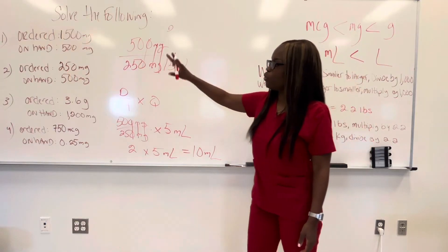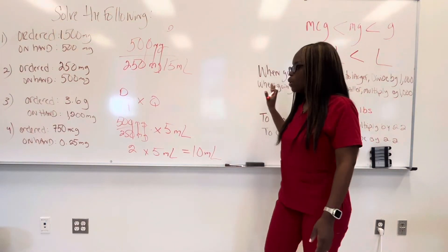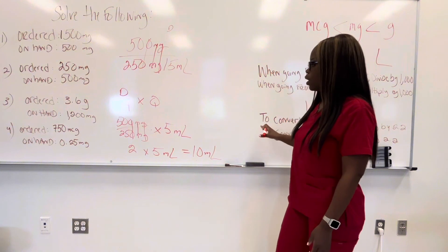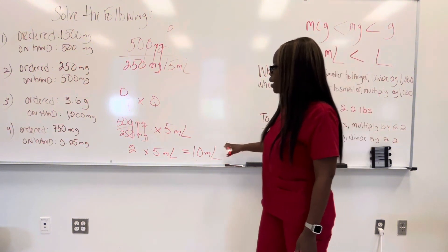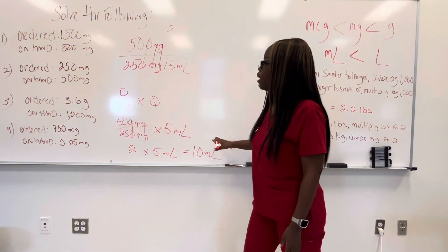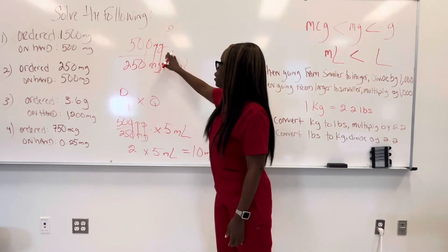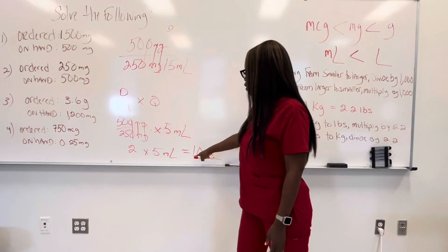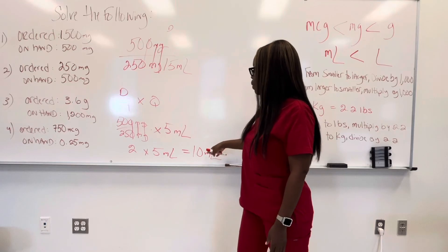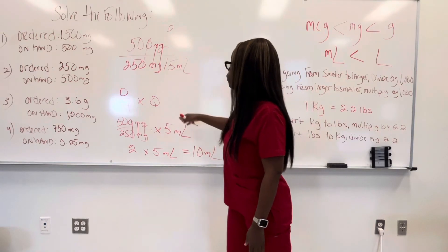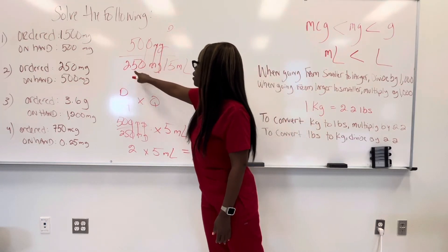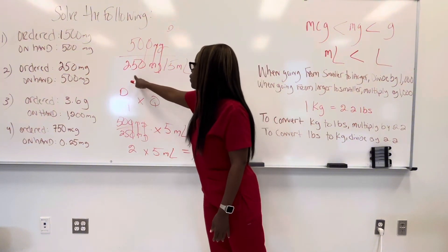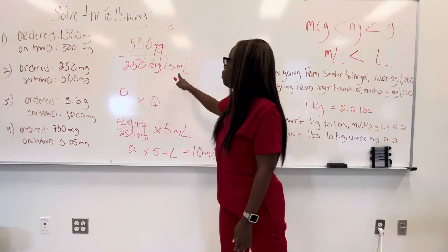Anytime you do dosage calculations, you can always double-check your answers. If I got 10 milliliters and the doctor ordered 500 milligrams, is it true that giving the patient 10 milliliters equals what he wants? Yes, because for every 5 milliliters, there are 250 milligrams of that medication — so 10 milliliters equals 500 milligrams.